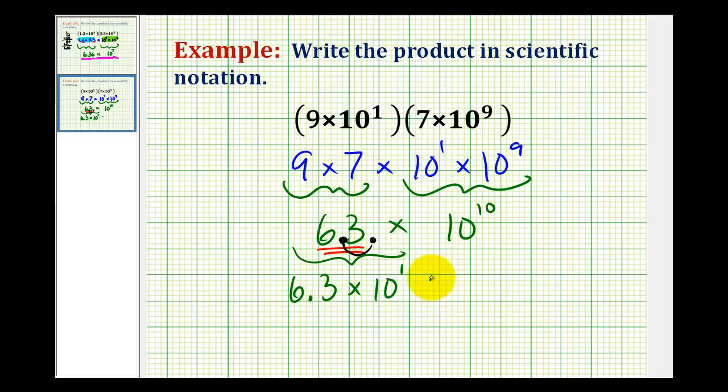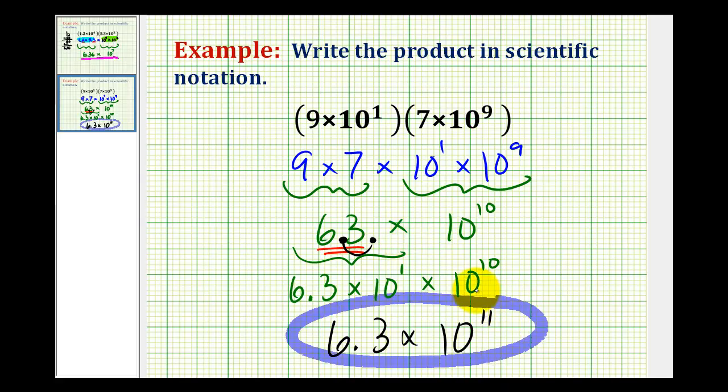We have to multiply this by 10 to the tenth. So our final product in scientific notation would be 6.3 times 10 to the, 10 to the first times 10 to the tenth would be 10 to the eleventh. So sometimes when multiplying numbers in scientific notation, we do have this extra step if the product is not in the correct form for scientific notation.